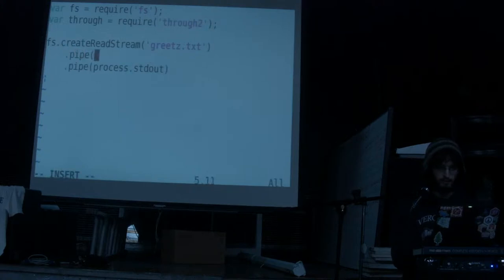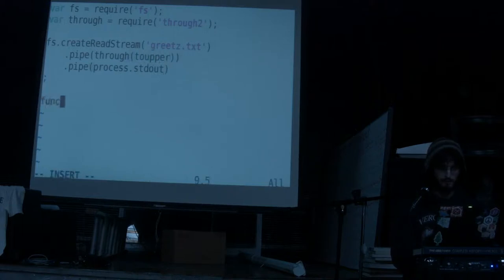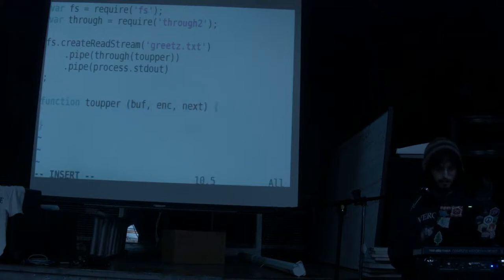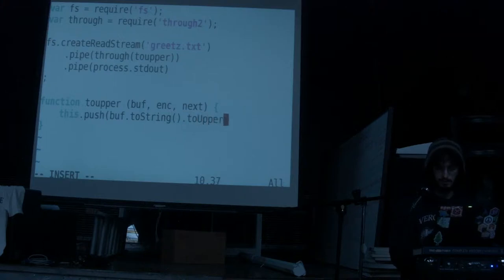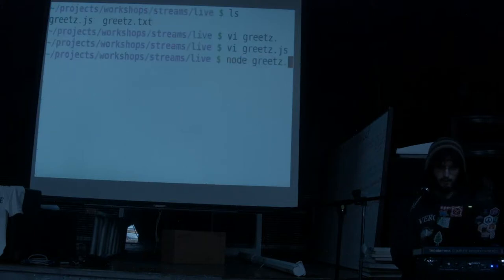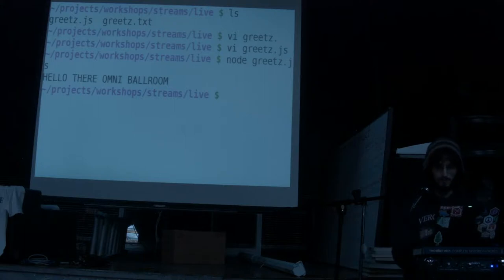We put in our segment: thru(), and now we get a write function called toUpper. The function takes buff, encoding, and next. We do this.push(buff.toString().toUpperCase()), and make sure to call next(). Now if we run our program, we should get an uppercase version of the text file — and we do.